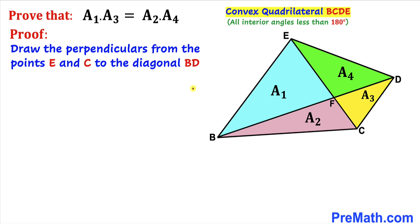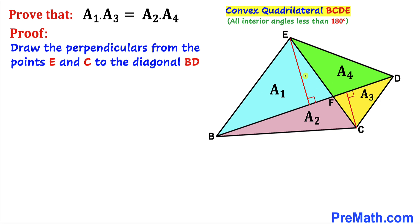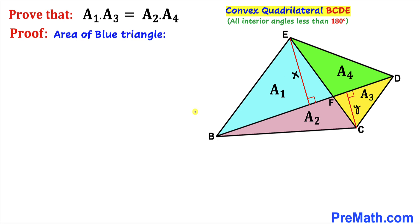Let's go ahead and drop perpendiculars from point E and from point C onto diagonal BD. As you can see in this diagram, these are our two perpendiculars and these angles are 90 degrees each. I'm going to call the first perpendicular height X and the second perpendicular height Y.